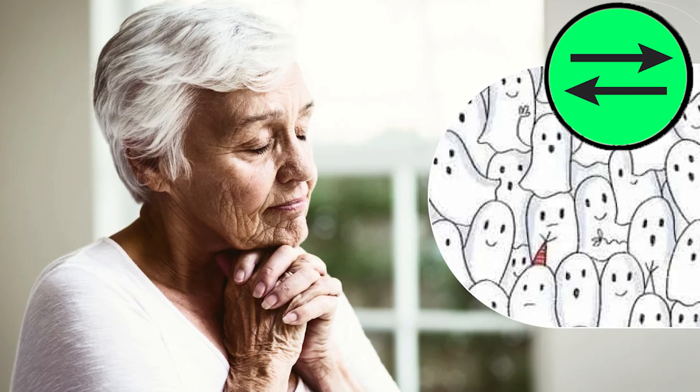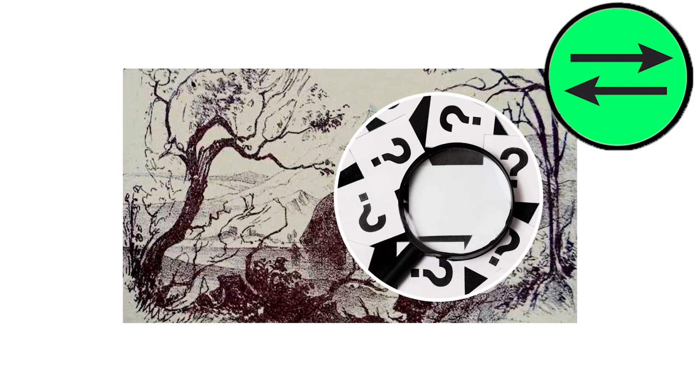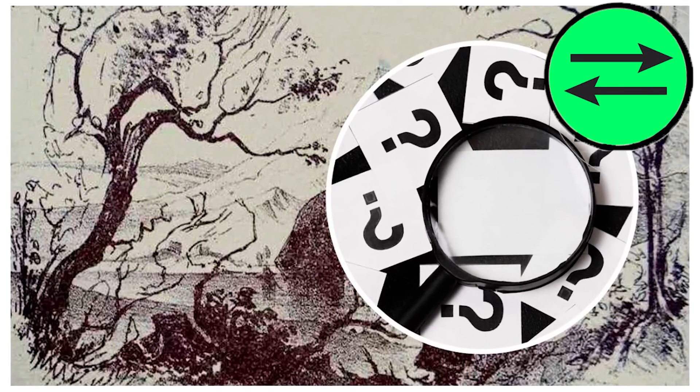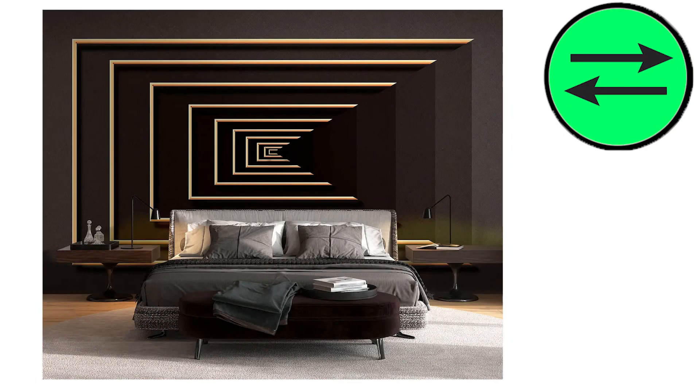In the Müller-Lyer image, there are two horizontal lines, one with arrows pointing to the outside and the other to the inside. The line with the outer arrows appears to be shorter than the line with the inner arrows, although they are actually the same length.